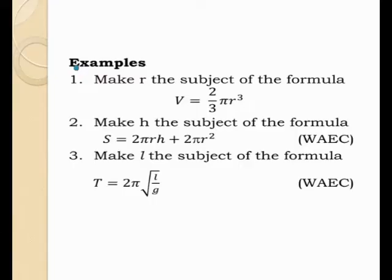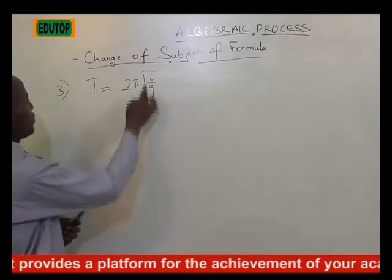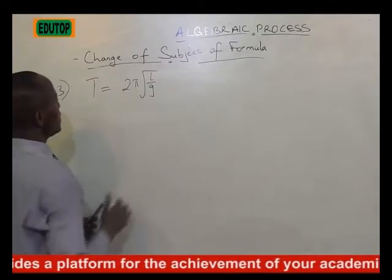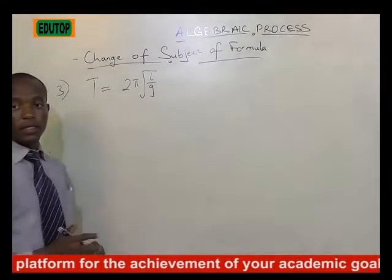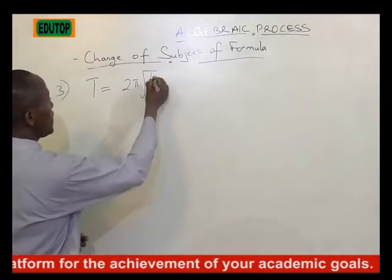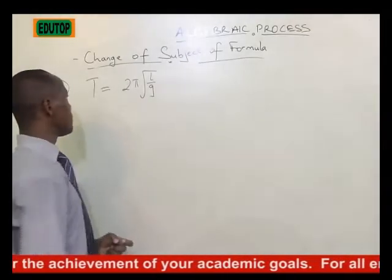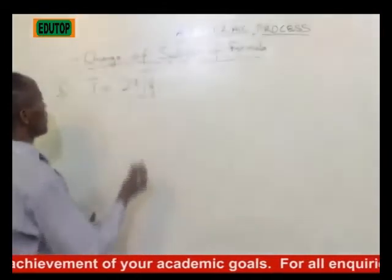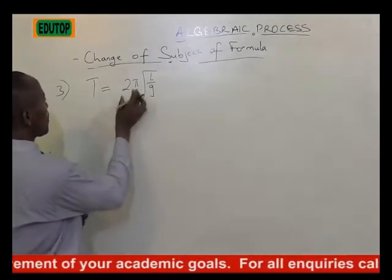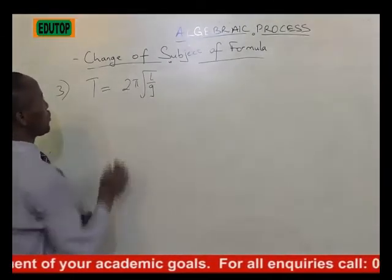Example number 3: make L the subject of the formula from T is equal to 2 pi square root of L over G. This square root is taking care of both L and G. We are interested in making L the subject of the formula. The first thing we want to do is to remove the 2 pi.